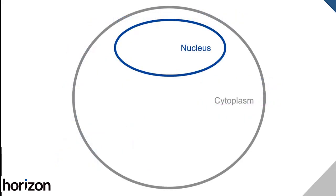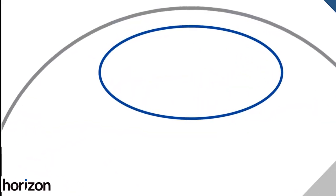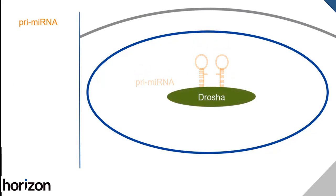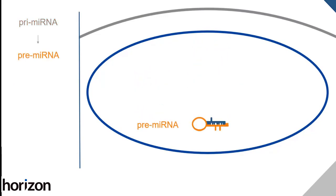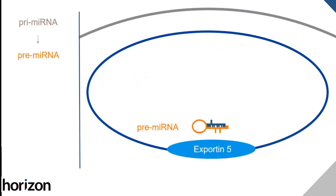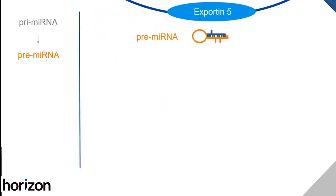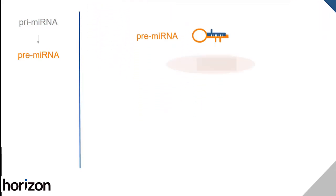Let's start at the beginning with how gene expression is regulated via the endogenous microRNA pathway. Primary, or pri-microRNAs, are processed by Drosha to precursor, or pre-microRNAs. After export to the cytoplasm, pre-microRNAs are processed by Dicer to make a mature microRNA duplex.